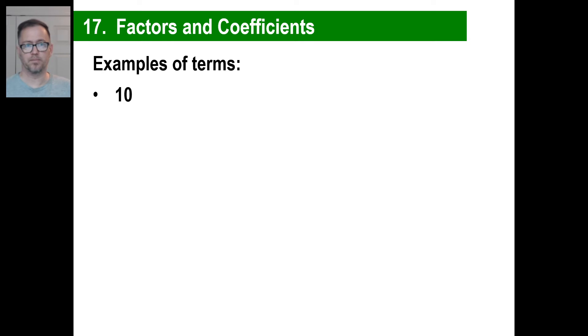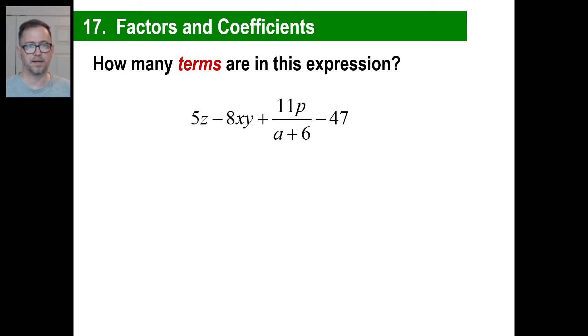A 10 is a term. Z is a term. 10 times Z is a term. Even something complicated like that, negative 3ab times y plus 2 in parentheses over z, it's still one thing being multiplied or divided.